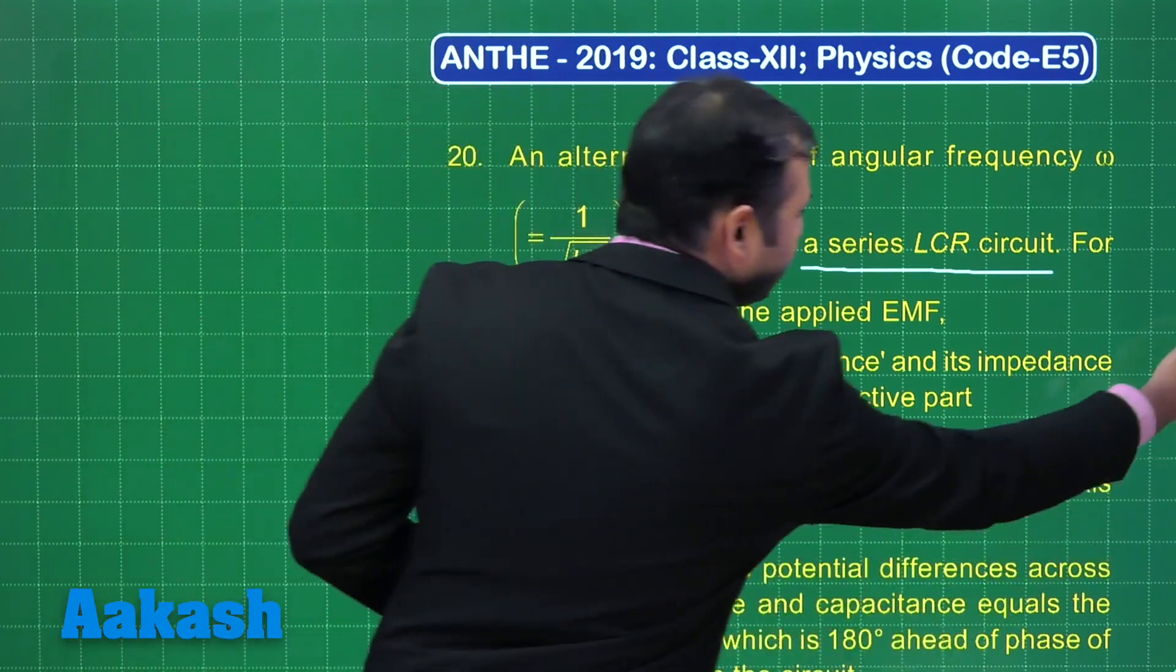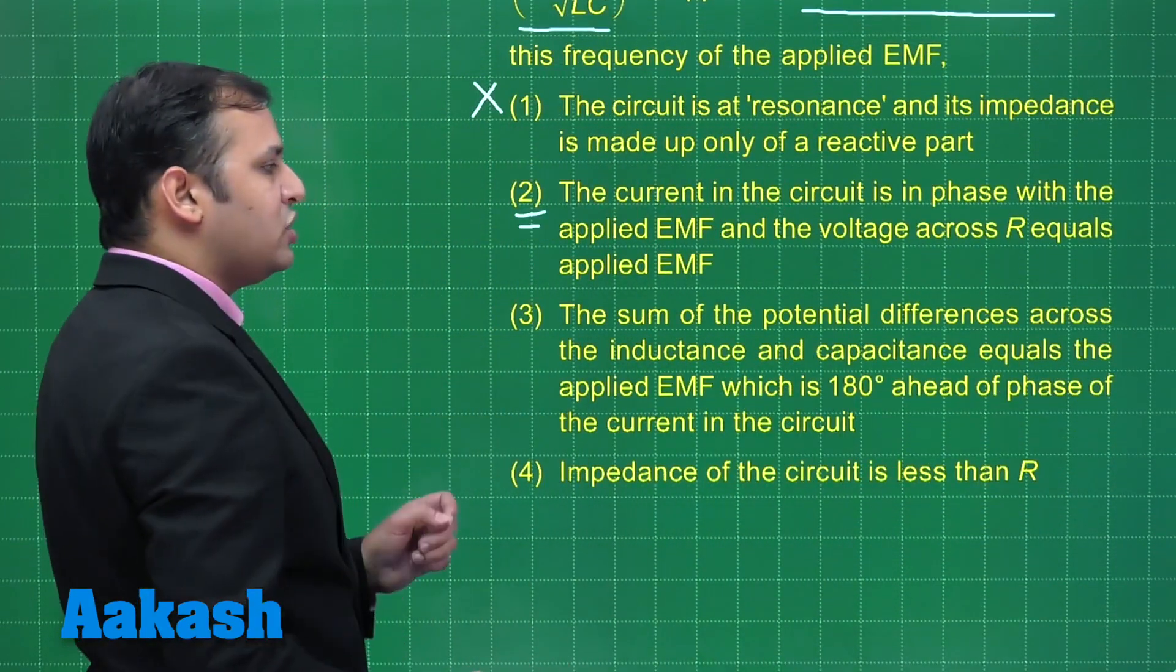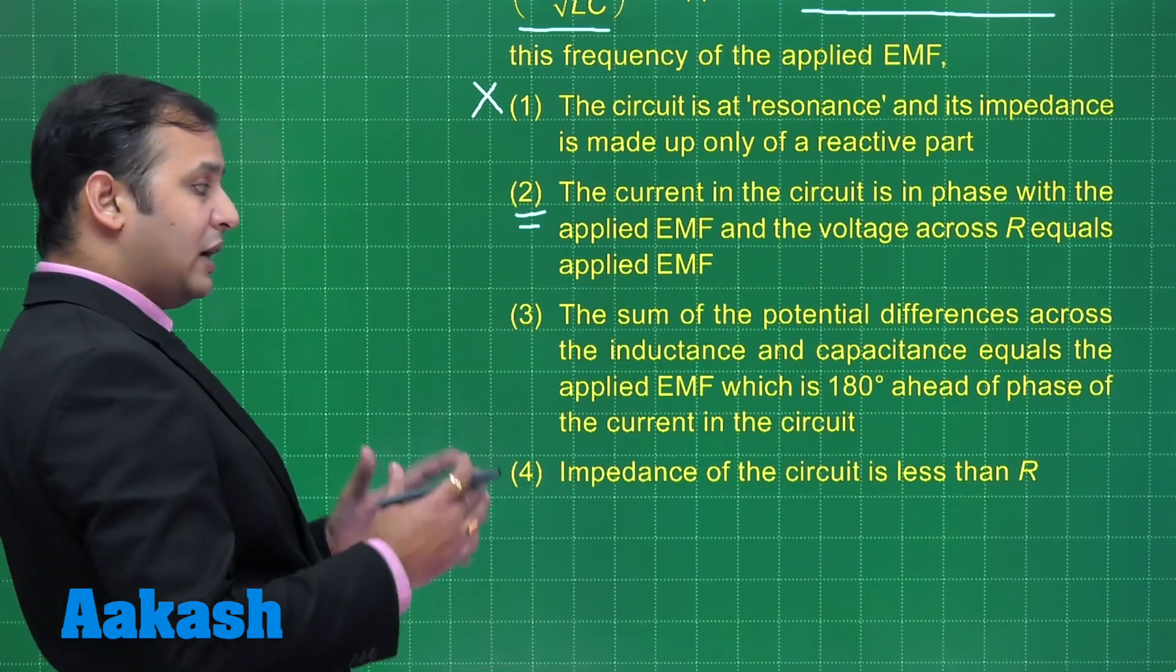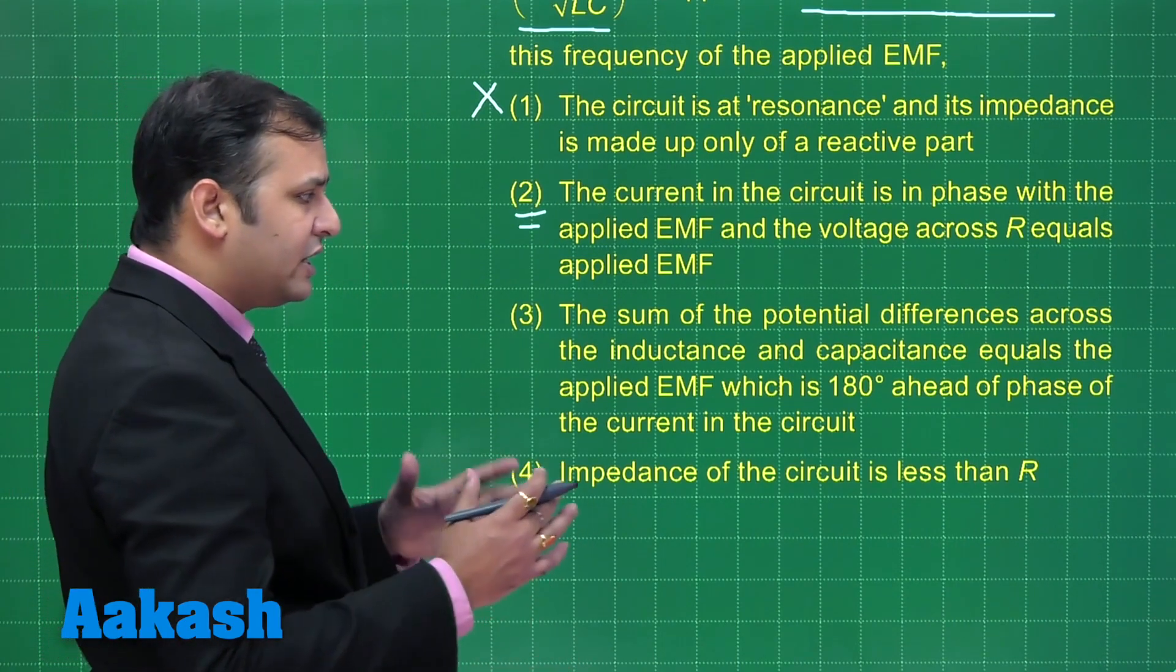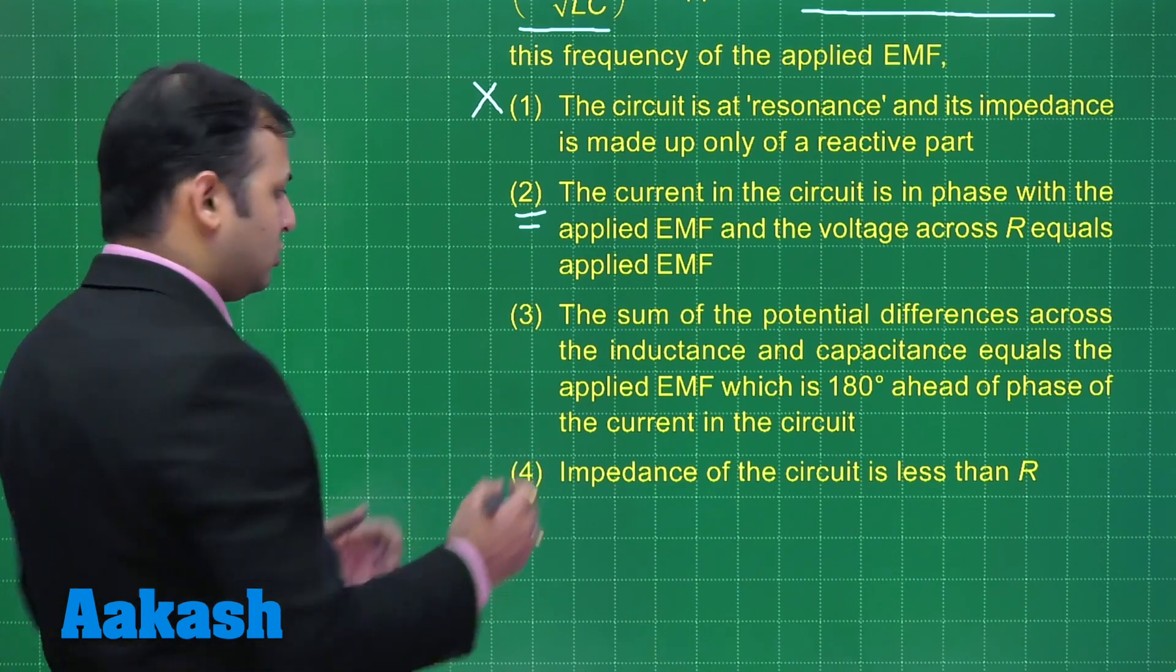Now, let us talk about the third point. The sum of the potential difference across the inductance and capacitance equals the applied EMF which is 180 degree ahead of phase of the current. No, this is wrong.